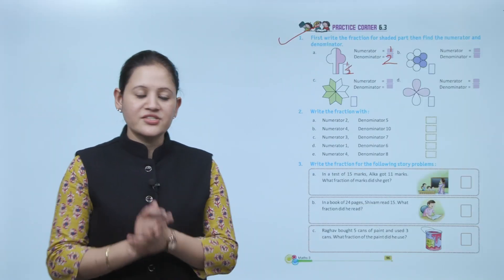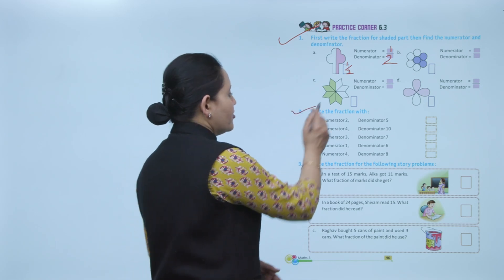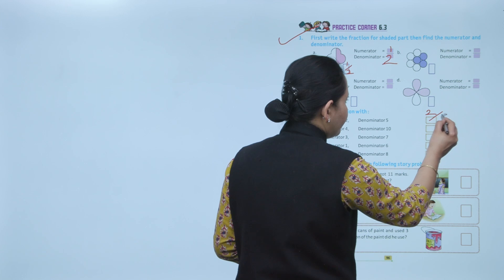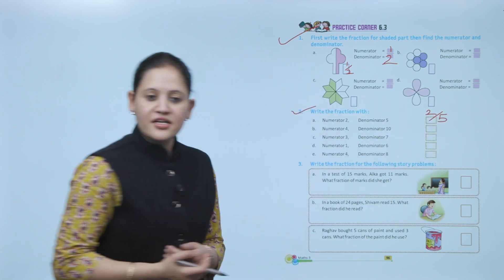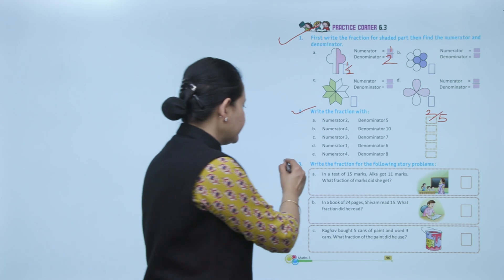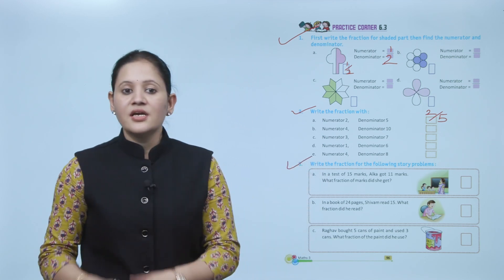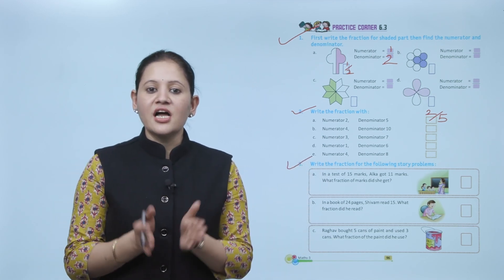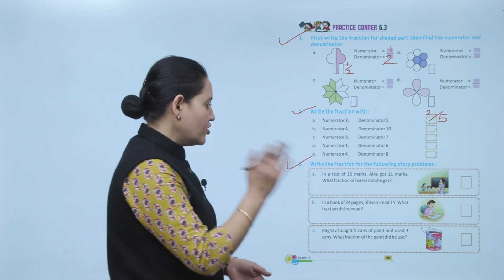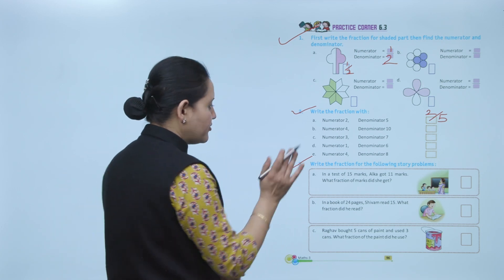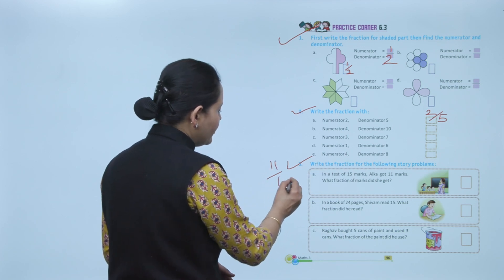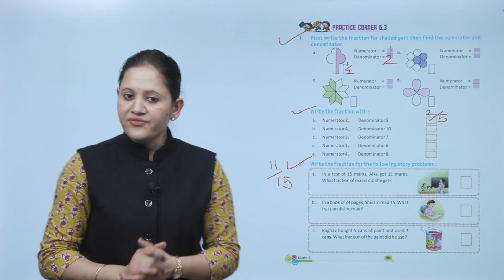Next: write the fraction with numerator 2, denominator 5 — so the fraction will be 2 by 5. Next, write the fraction for the following story problem: in a test of 15 marks, Alka got 11 marks. What fraction of marks did she get? Total marks 15, out of that she got 11, so the fraction is 11 upon 15.